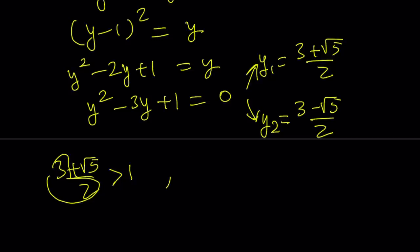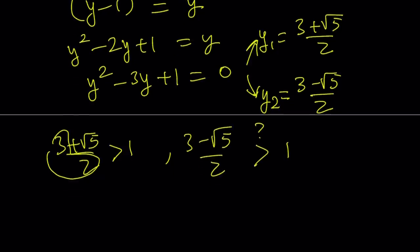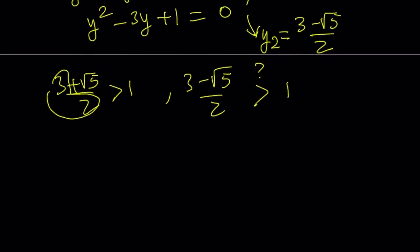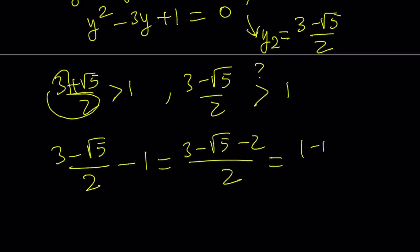But what about the other number? (3 - √5)/2, is it greater than 1? So, I'm going to put a question mark, and in order to find out, I can do this. I can just go ahead and subtract these numbers and see if this difference is going to be positive or not. If you make a common denominator, you get (3 - √5 - 2)/2, and that is (1 - √5)/2. And as you know, √5 is greater than 1, therefore, this is a negative value, which means this is negative.